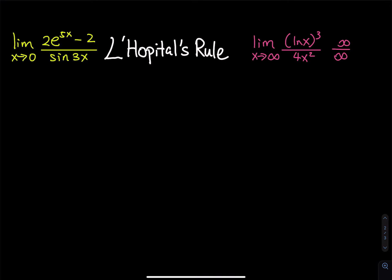The first limit is 2 times e to the 5x minus 2, divided by sine of 3x. When you plug in x equals 0, the top is 2 minus 2, which is 0. The bottom, sine of 0, is also 0. So since we have 0 over 0, we will apply L'Hôpital's rule. When we apply L'Hôpital's rule, we write an H, meaning in the following step we take the derivative of the top and the derivative of the bottom.